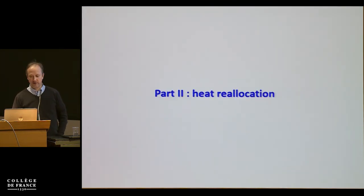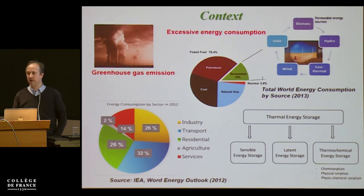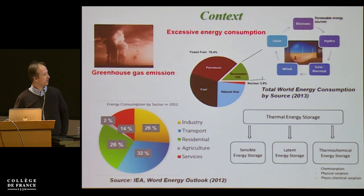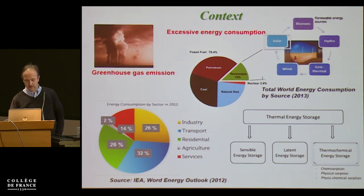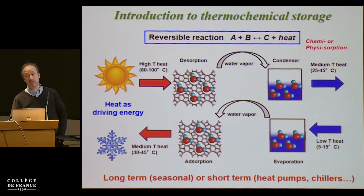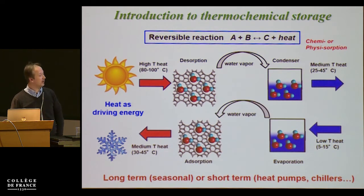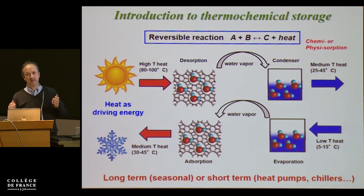I now turn to a second type of application: solar thermal energy storage, still related to water adsorption. The context is excessive energy consumption, greenhouse gas emissions, and interest in recovering waste heat from industrial processes. We are interested in solar thermal applications — recovering excess heat produced during summer and using it in wintertime. This is based simply on adsorption-desorption of water: adsorption is exothermic and desorption is endothermic. Porous solids such as zeolites and aluminophosphates have been used for decades. Short-term applications include heat pumps and chillers; long-term applications are seasonal heat storage.